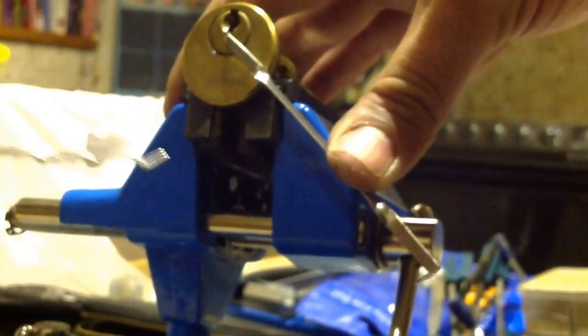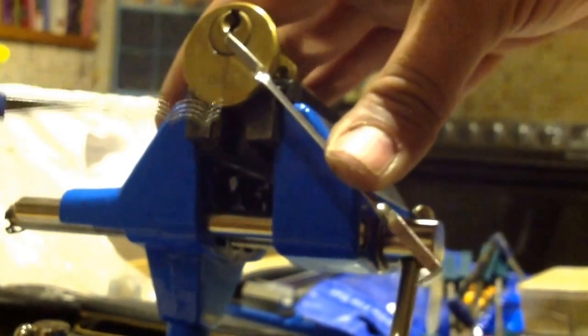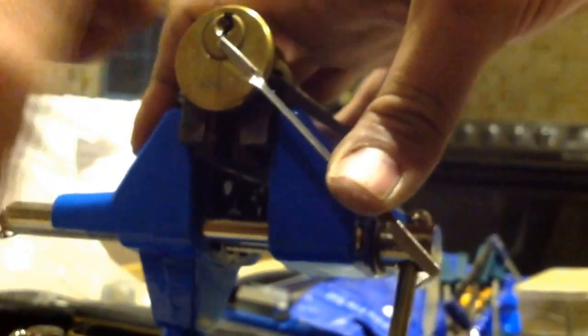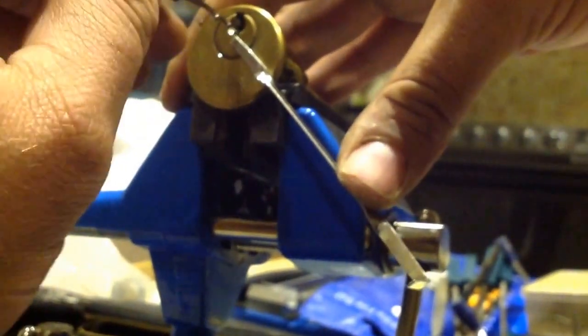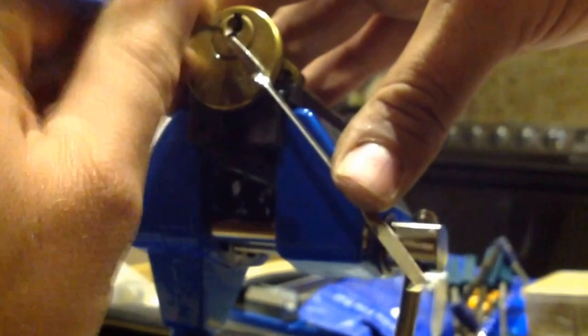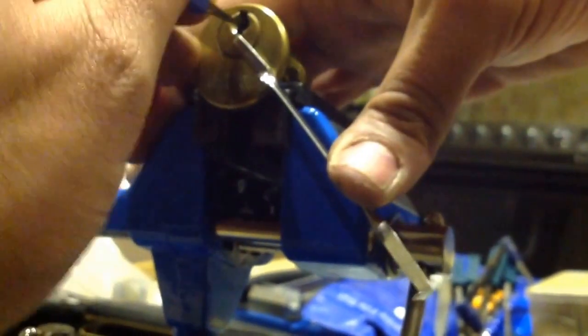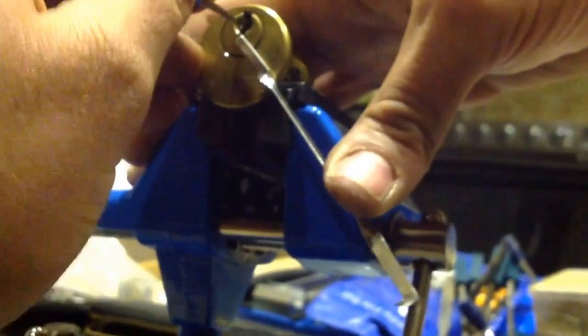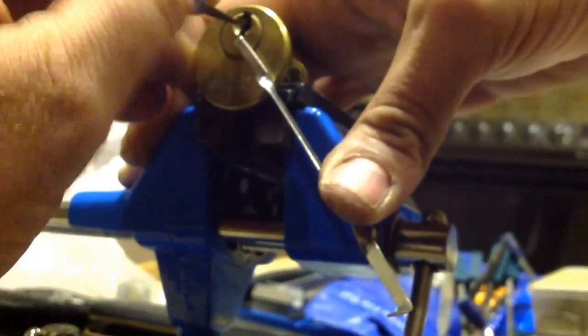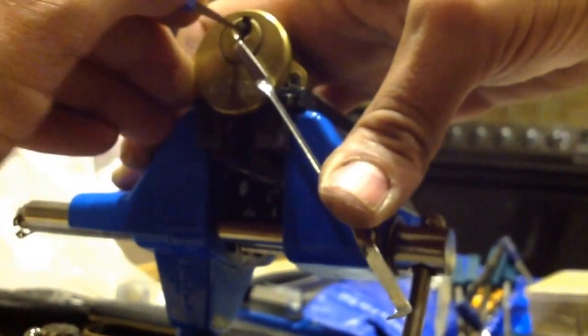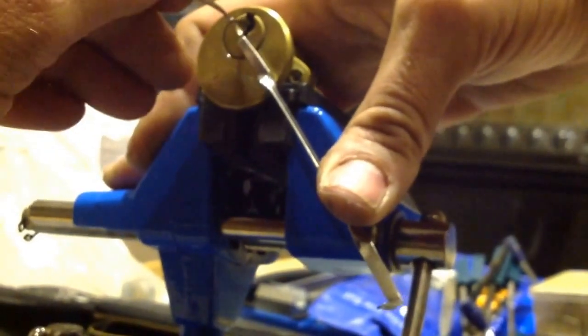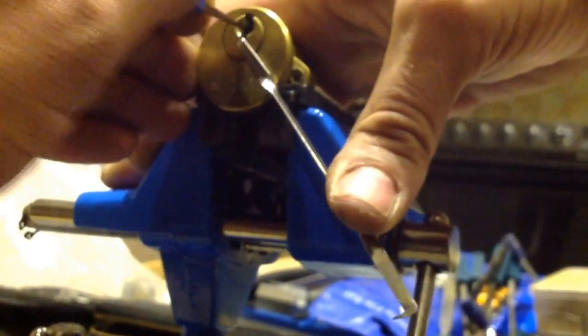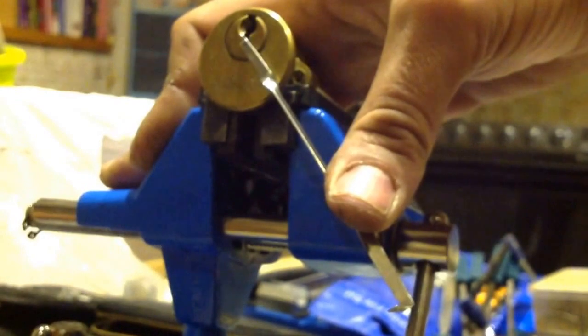First of all I'm going to try and rake it at least into a false set. So it's locked up, no key. Might try and make one at some point and, and it's got it into a false set already, it's not a very deep one. There's really light tension on this, you can overset it quite easily.